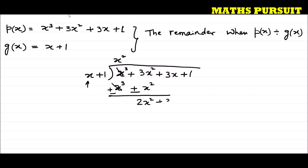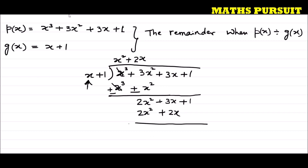Now we have 2x². What should I multiply by x to get 2x²? If I multiply 2x by x, I get 2x². So 2x × x = 2x², and 2x × 1 = 2x. We subtract again, reversing the symbols: 2x² − 2x² cancels out to 0. Then 3x − 2x = x, giving us x + 1.